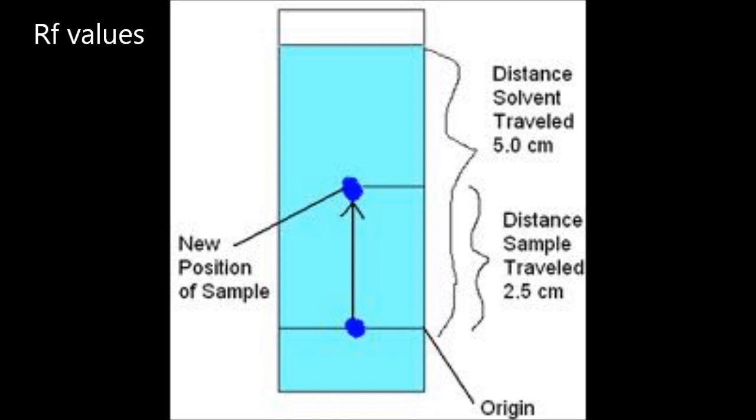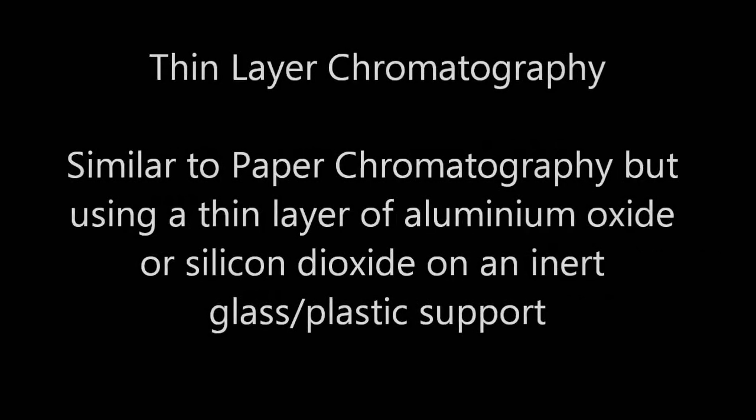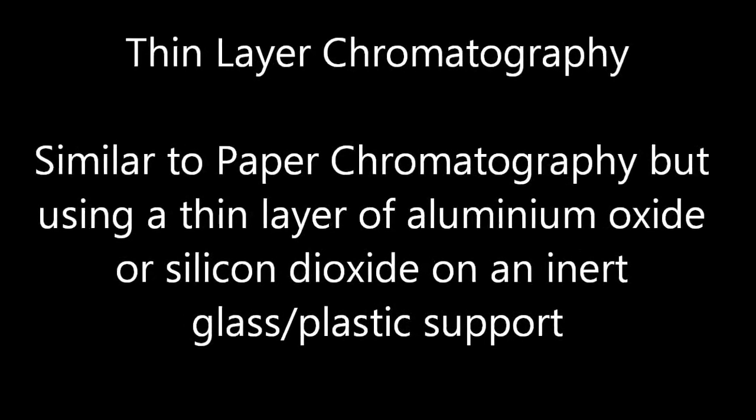So in this case, the RF value is 0.5, no units. Thin layer chromatography: instead of using cellulose as the stationary phase, alumina or silicon dioxide is used on an inert support.